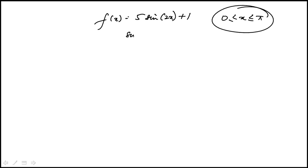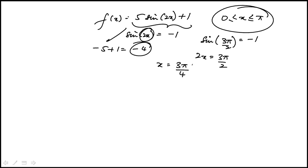The least value would be when sine of 2x is minus 1. In that case the value of the function would be minus 5 plus 1 is minus 4. And that's going to happen when sine of 3π over 2 is minus 1. So 2x is 3π over 2. That's going to happen at x equal to 3π over 4. So our minima is at 3π over 4, minus 4.